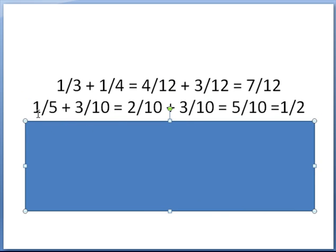Now we're dealing with one-fifth plus three-tenths. A common denominator is 10, because 5 goes into 10 twice. So one-fifth becomes two-tenths, and we're now dealing with tenths. Simply add two plus three, which equals five-tenths, and that reduces to one-half.